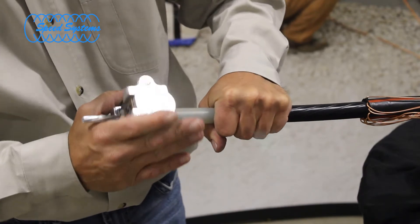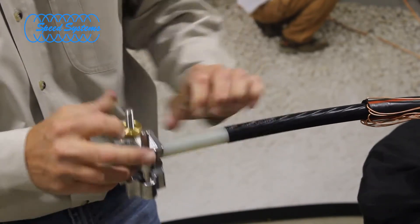It is helpful to chamfer the insulation to ease the installation of molded rubber products. See the Speed Systems Chamfering Tool video for a demonstration.